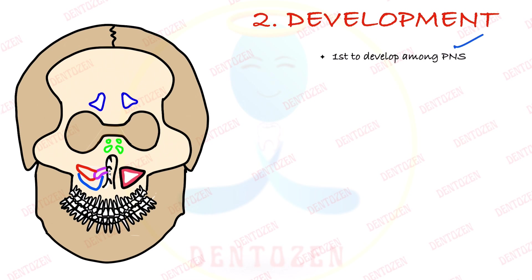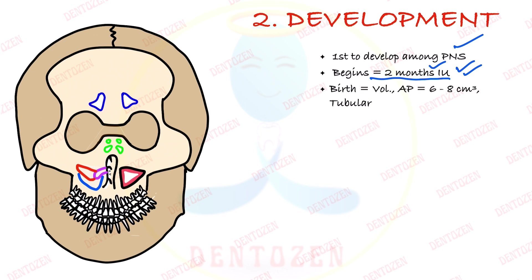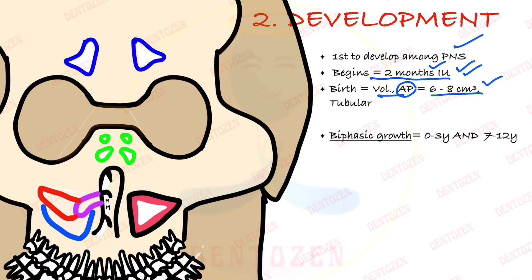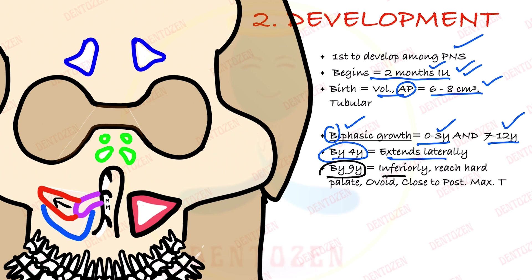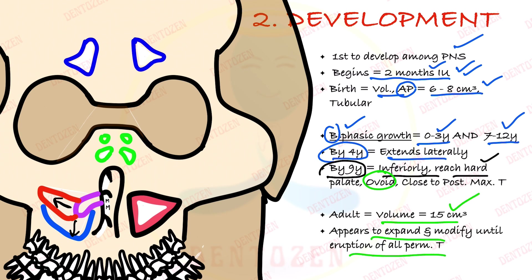It is the first paranasal sinus to develop, beginning at the second month of intrauterine life. At birth, its volume is six to eight cubic centimeters in the anterior-posterior direction. After birth, its growth happens in two phases — biphasic. First phase is zero to three years, second phase is seven to twelve years. By age four it extends laterally, and by age nine it expands inferiorly, coming close to the hard palate and the posterior maxillary teeth. In adults its volume is 15 cubic centimeters, and it keeps expanding until eruption of all permanent teeth.